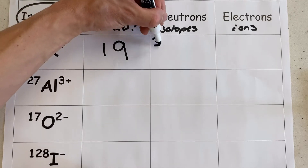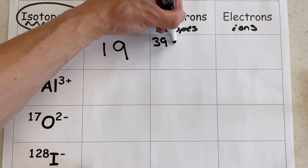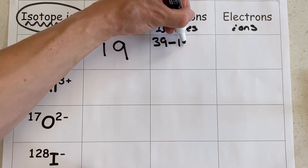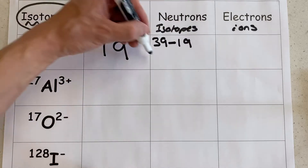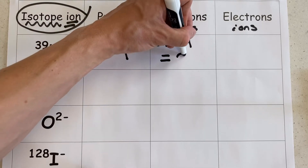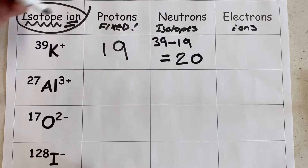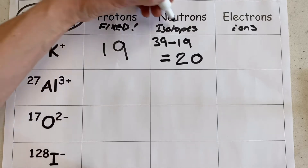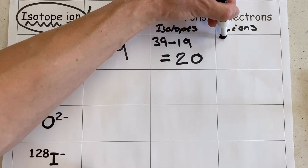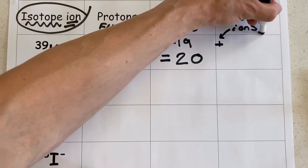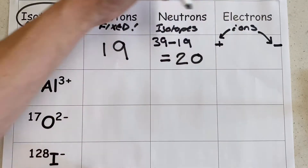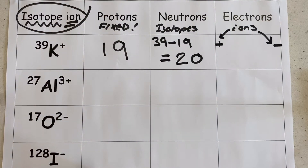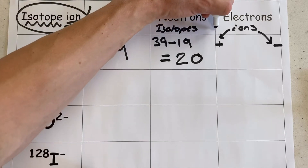The mass number we've been given is 39. Using this number we can determine the number of neutrons by doing the mass number minus the proton number, and it gives us a value of 20. If this was a neutral isotope of potassium, the number of protons would equal the number of electrons. However, we can see that our potassium isotope has got a positive charge, which means we have changed the number of electrons.